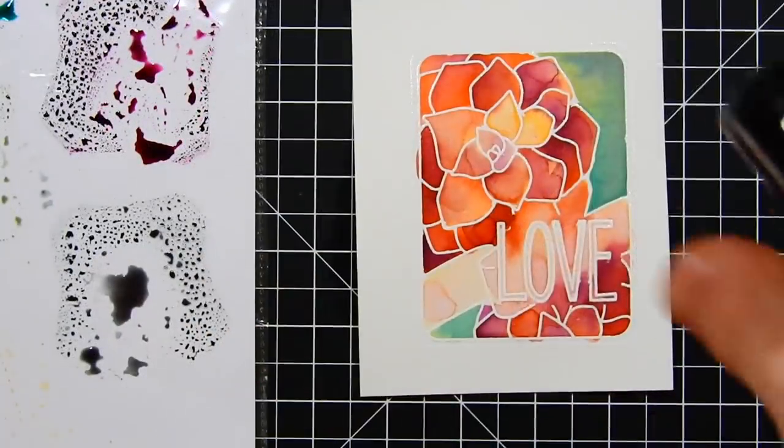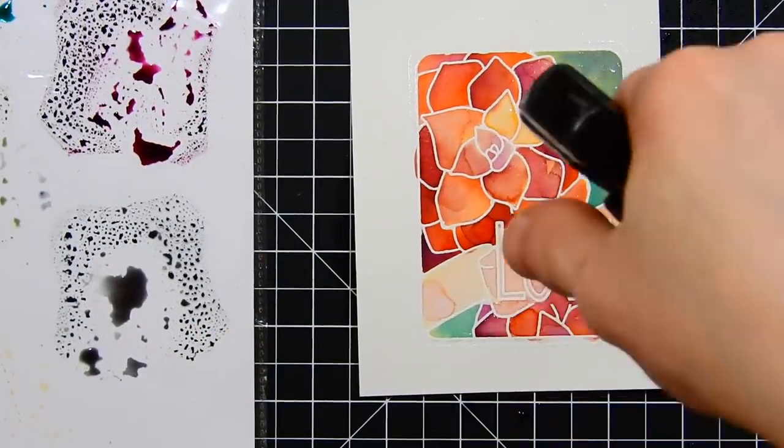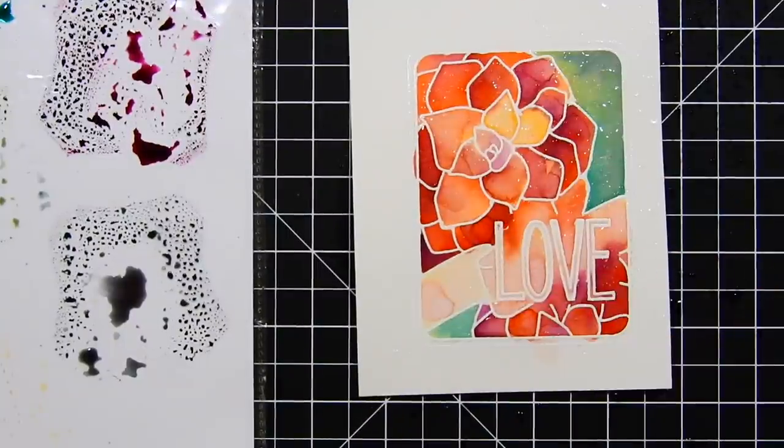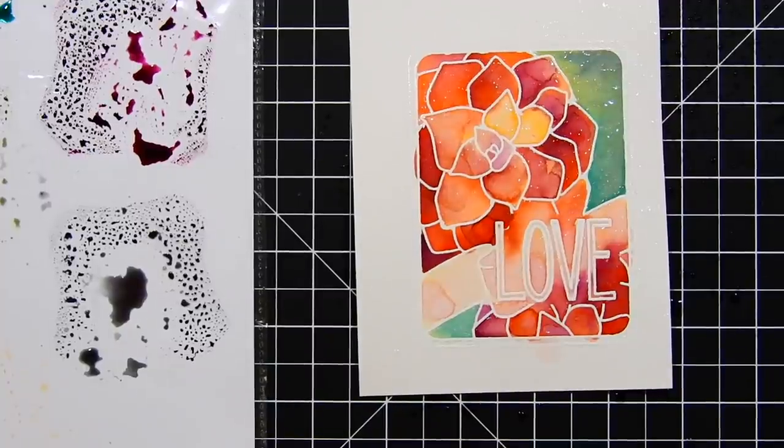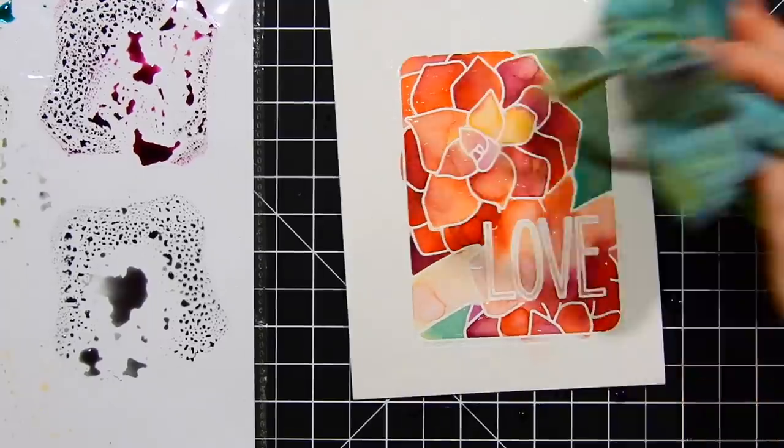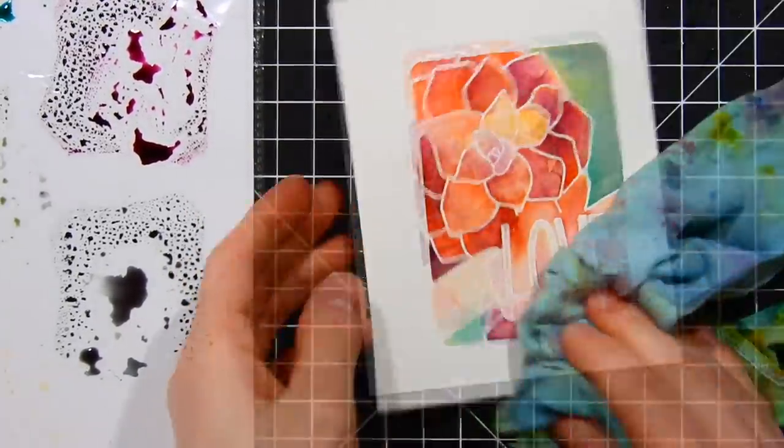I'm going to keep adding color until I'm happy with it. I went ahead and dried it and now I'm going to take my distress sprayer and add water droplets. I'm going to cover this entire panel with the water droplets to get some nice texture. I let it sit for about a minute. This video is sped up quite a bit. I'm going to blot this dry with my rag and I'll work on another layer of color.